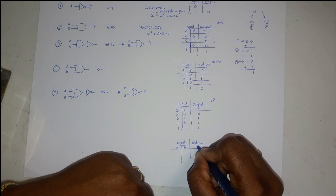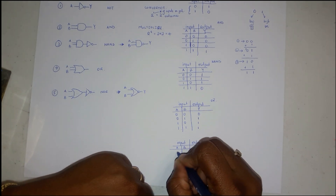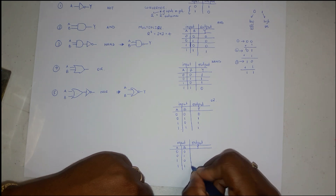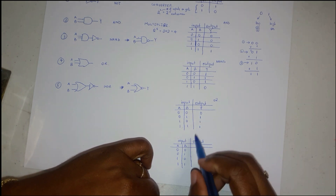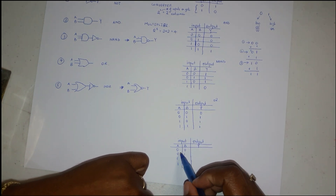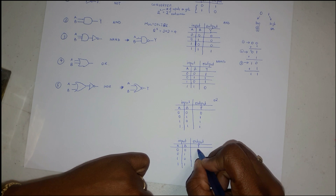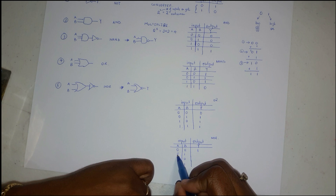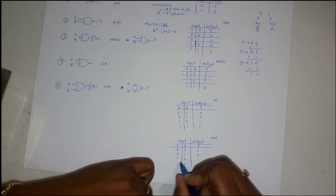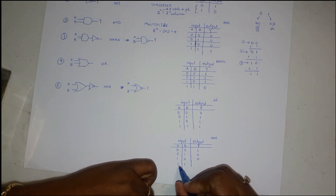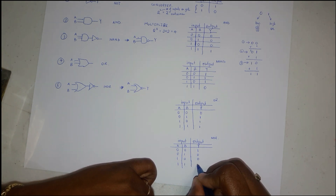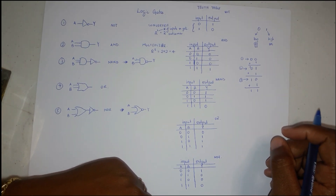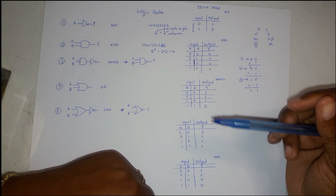For the NOR gate truth table we have inputs A, B and output Y — the same four outcomes. It's the opposite of the OR gate. So where OR gives nothing from nothing as nothing, NOR gives something. Where OR gives something from nothing as something, NOR gives nothing. And where OR gives something from something, NOR gives the opposite — nothing. So the NOR output column is 1, 0, 0, 0.